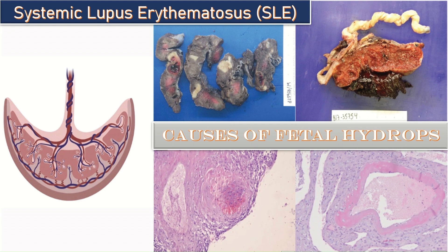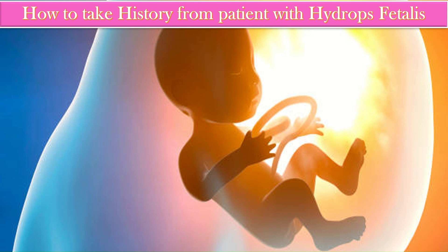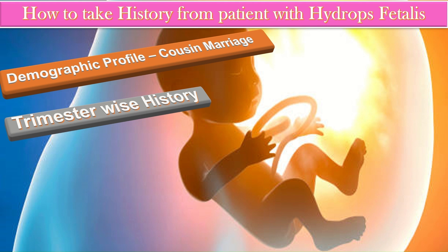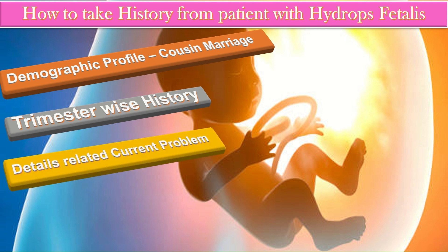Now, how to take history from a patient with hydrops fetalis. First, take history related to the demographic profile: name, age, educational status, and occupation. It is very important to ask whether it was a cousin marriage, as this is a risk factor for hydrops fetalis. Ask about gravidity and parity, LMP, gestational age, expected date of delivery, and presenting complaint. Take trimester-wise history in detail, and inquire about the pattern of abdominal growth, fetal movements, symptoms of uterine distension or pressure symptoms like heartburn, dyspepsia, abdominal discomfort, and PR bleeding.